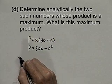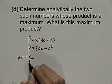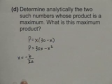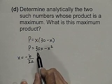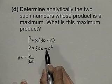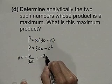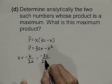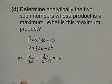Recall that the x coordinate of the vertex is found by using the formula negative b over 2a. In our particular quadratic function, b is 30, a is negative 1, so the x coordinate of the vertex is negative 30 over 2 times negative 1, which simplifies to 15.